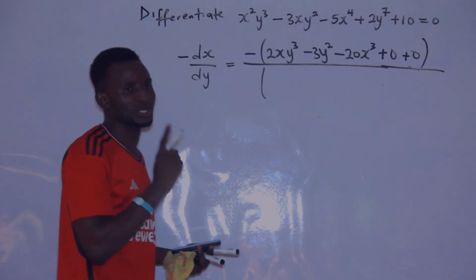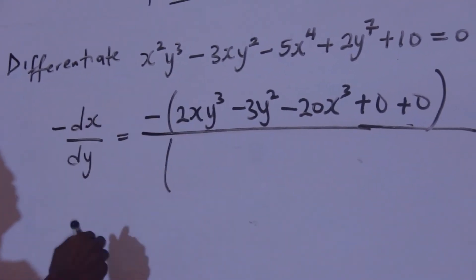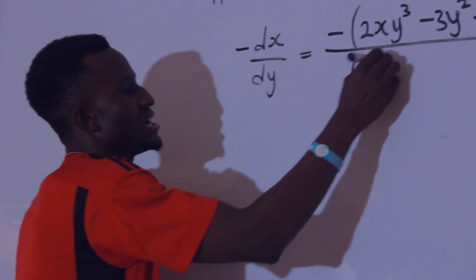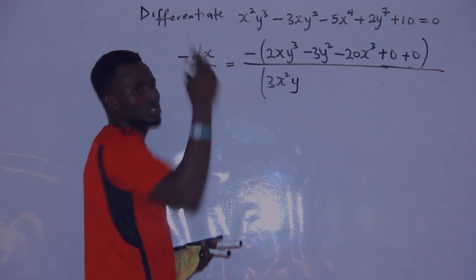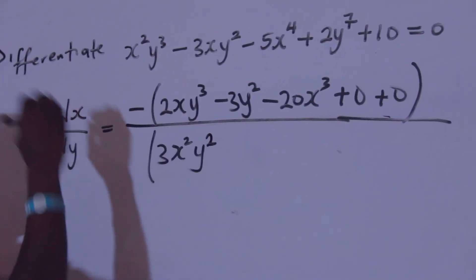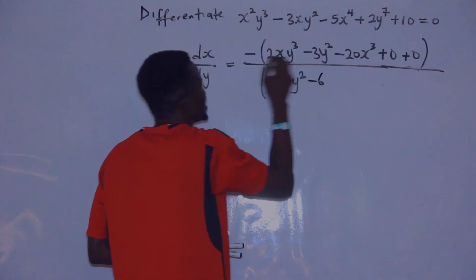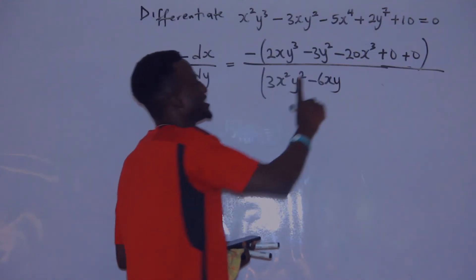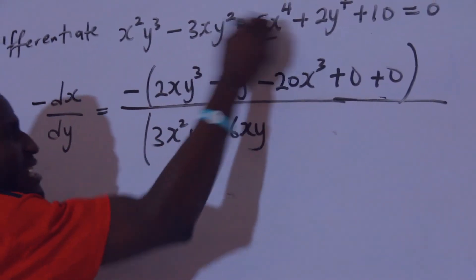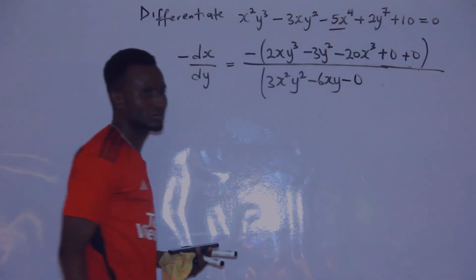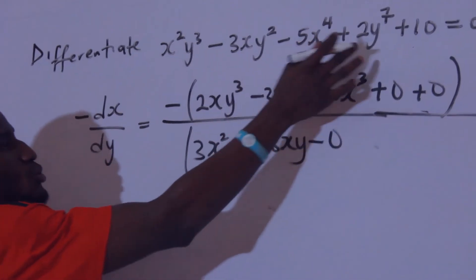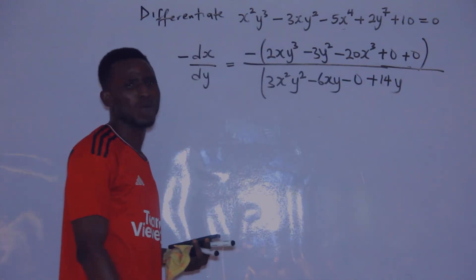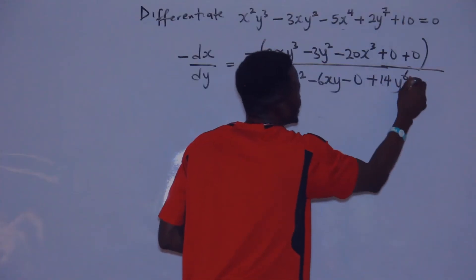For the denominator, differentiating with respect to y: for x squared y cubed, we get 3 times 1 equals 3, include x squared, and y becomes y squared. For minus 3xy squared: 2 times minus 3 is minus 6, include x, and y becomes y to the power 1. The minus 5x to the power 4 term has no y, so it gives 0. For 2y to the power 7: 7 times 2 equals 14, giving y to the power 6. The constant 10 differentiates to 0.